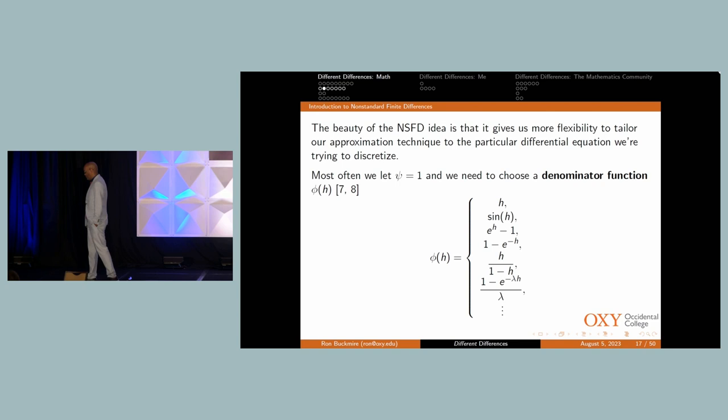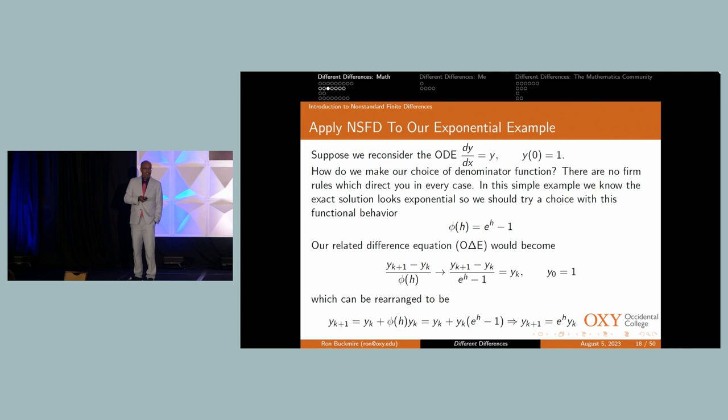There's a discrete analog of the Mickens difference, which looks like DY DX is Y sub K plus one minus C times Y sub K over a phi of H. In most cases, we can sort of ignore C and just let it be one. And what we're really focused on is the phi of H function in the denominator. It's called the denominator function. These differences, which Professor Mickens introduced in the late 70s, early 80s, we now call them nonstandard finite differences or NSFD schemes, or I've been trying to popularize the term Mickens differences. Okay. And so what's the beauty and power of the NSFD schemes is that because you have this flexibility of choosing a denominator function, you can use information or insight or intuition about the structure of the ordinary differential equation to let you know what kind of denominator function you want to choose. And you're only restricted that these denominator functions have to be big O of H as H goes to zero.